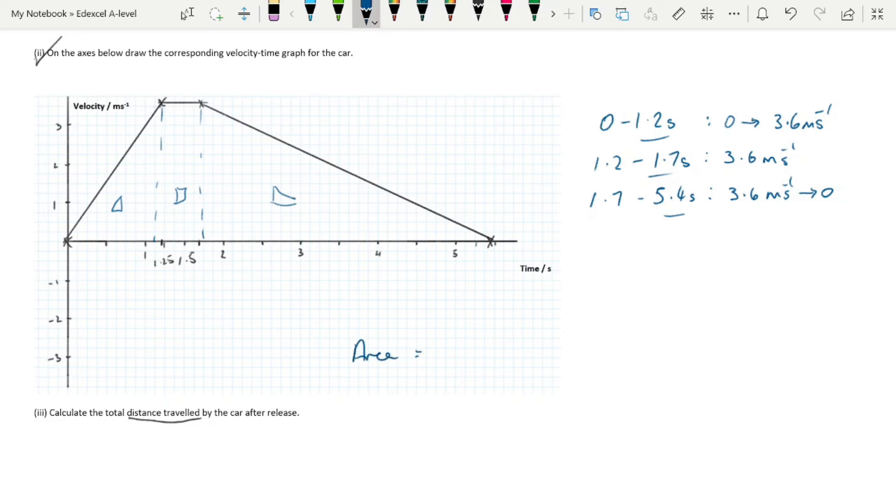Our area is going to be equal to half base times height for our first triangle, plus base times height for our rectangle, and half base times height again for our third triangle. We have half times 1.2 times 3.6 for our first triangle, giving us a total of 10.62 meters.